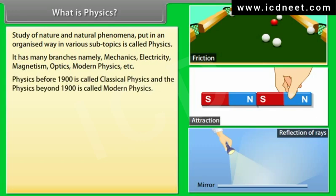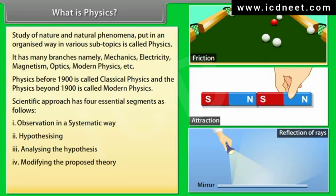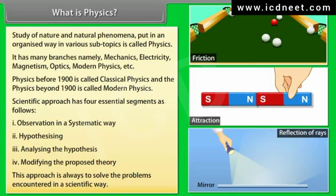Physics before 1900 is called classical physics, and physics beyond 1900 is called modern physics. The scientific approach has four essential segments: (1) observation in a systematic way, (2) hypothesizing, (3) analyzing the hypothesis, and (4) modifying the proposed theory. This approach is used to solve problems encountered in a scientific way.